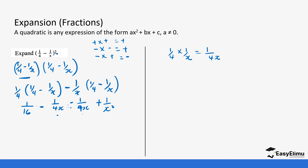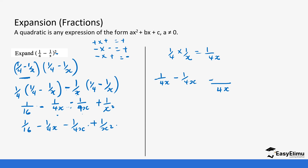Let's write this expression one more time: 1/16, then minus 1/4x minus 1/4x, plus 1/x². So for the like terms, this is minus 1/4x minus 1/4x. You can treat it like a normal fraction — the LCM is going to be 4x. So 4x divided by 4x is 1, minus 1, which gives us minus 2 over 4x. So the simplified expression is 1/16 minus 2/4x plus 1/x².